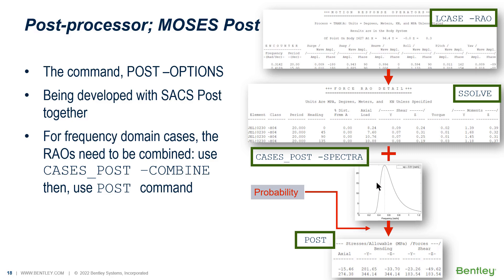This is done in the structural POST processing menu, because this is a POST processing of results. Once we have the response spectrum, we can calculate the root mean square of the forces. Then, assuming the peak follows the Rayleigh distribution, we can get the final stresses based on the probability we define. The default in Moses is one-thousandth exceedance probability, though of course we can change to other values.